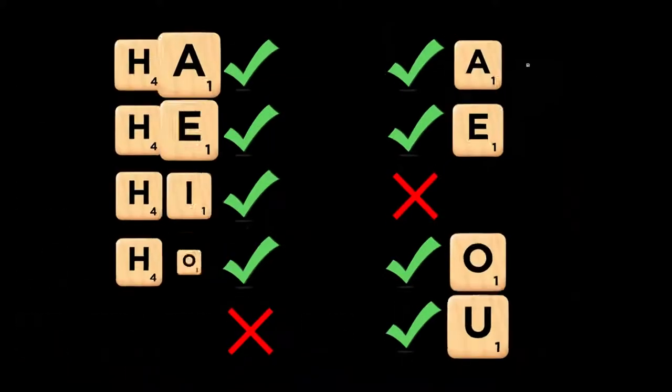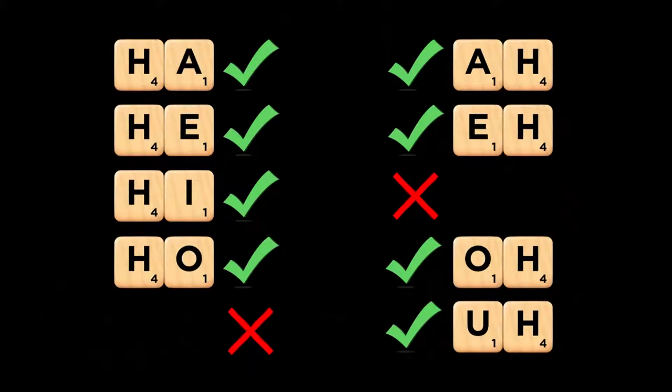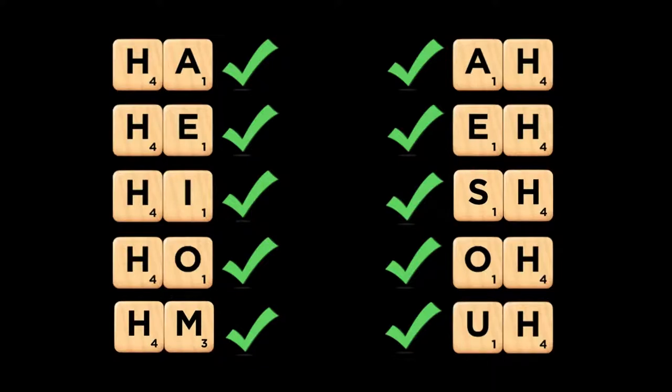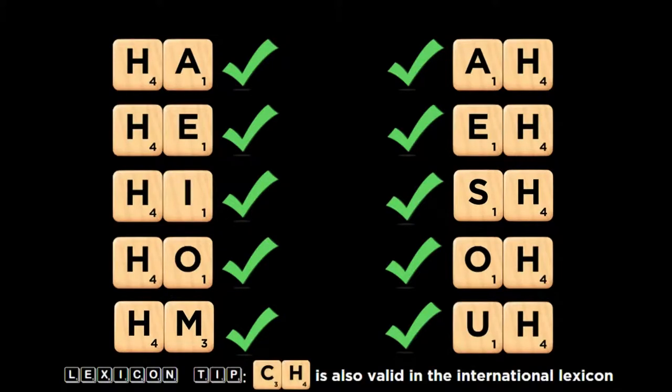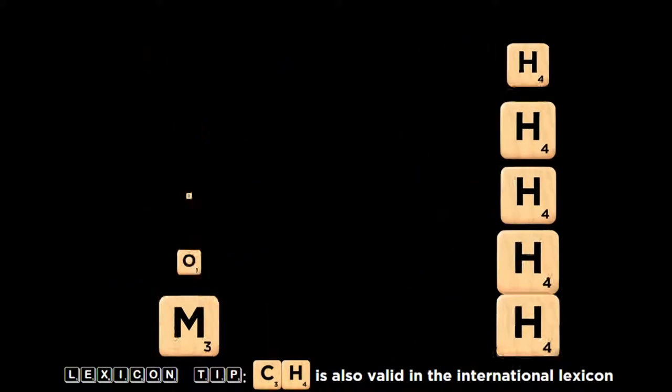The first thing to know about the H is its affinity for forming two-letter words. Not only does it form two-letter words with 8 out of the 10 possible pairings with vowels, it also plays with the M and S for good measure, making it an extremely flexible letter for scoring with parallel plays.